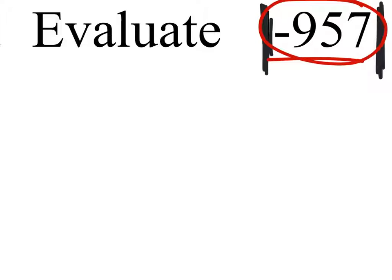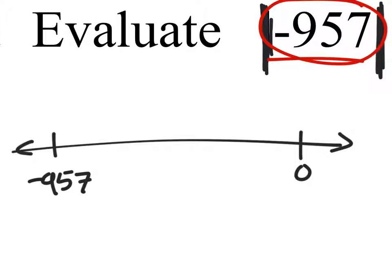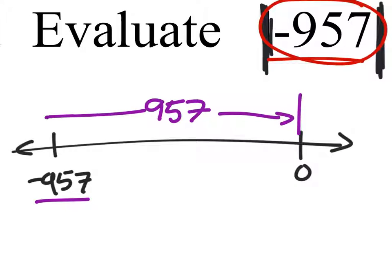If we were to graph this, the distance negative 957 is from zero is actually just 957 units away from zero, and we can kind of draw it like this.